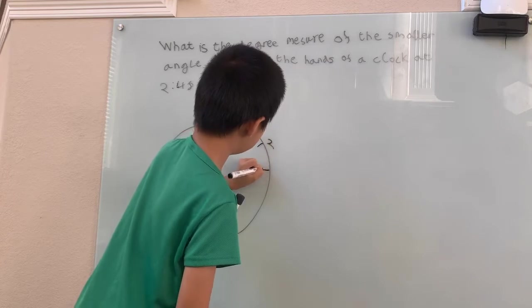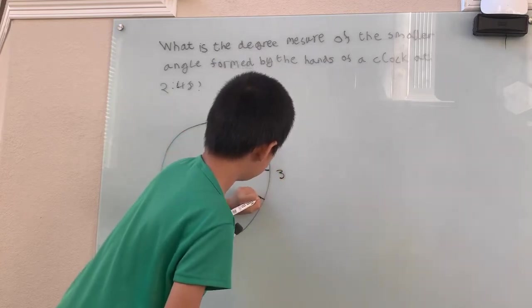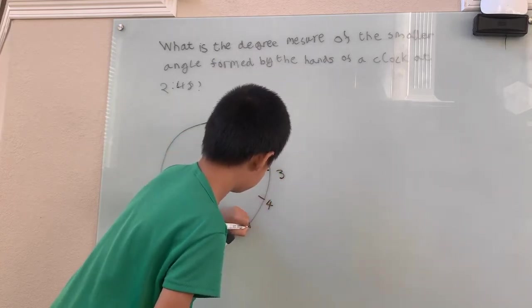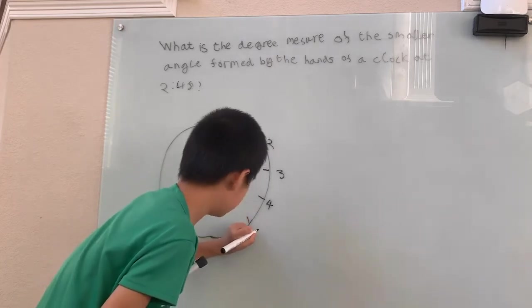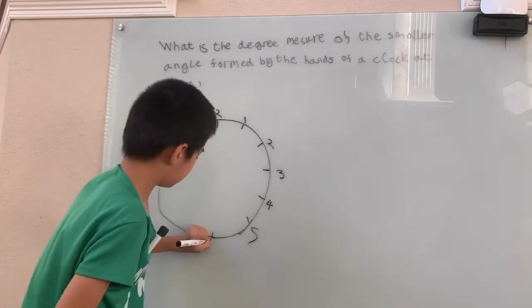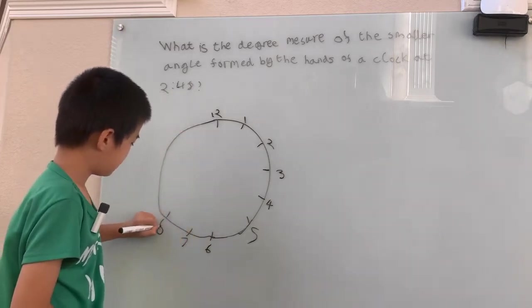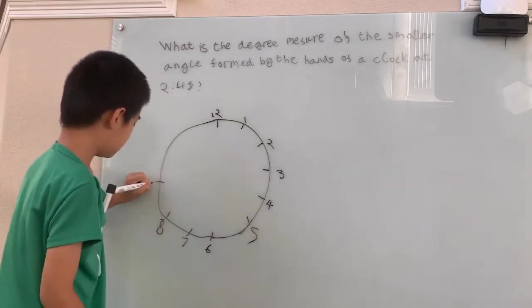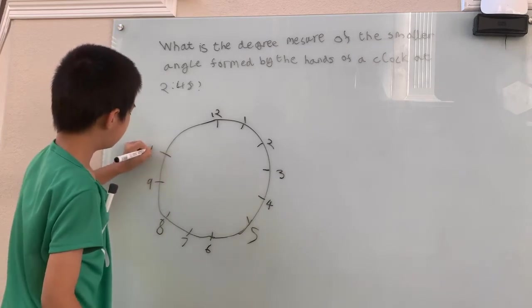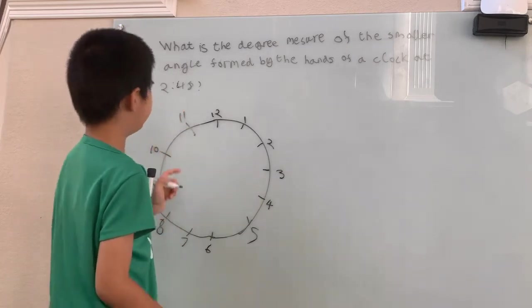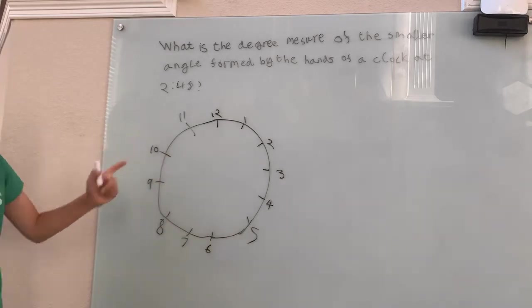Draw half a clock and then the other half of the clock. Okay, there's our clock. I'm going to label the clock. 2, 3, 4, 5, 6 is right across from there, 12, 7, 8, 9, 10, and finally we have 11.